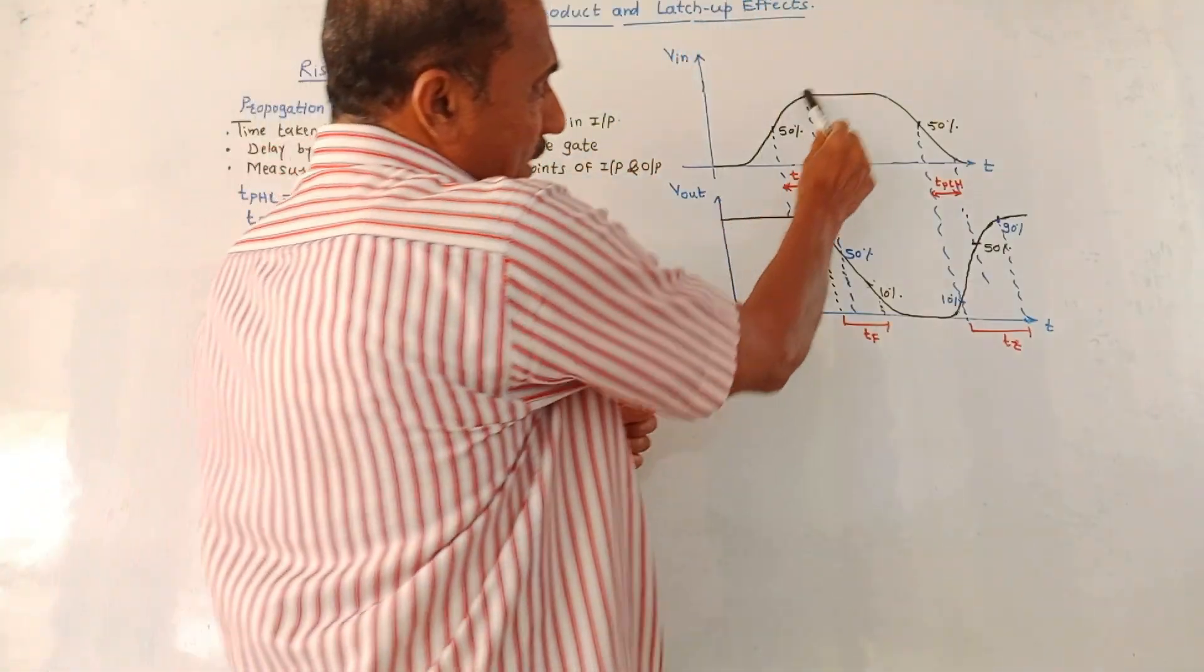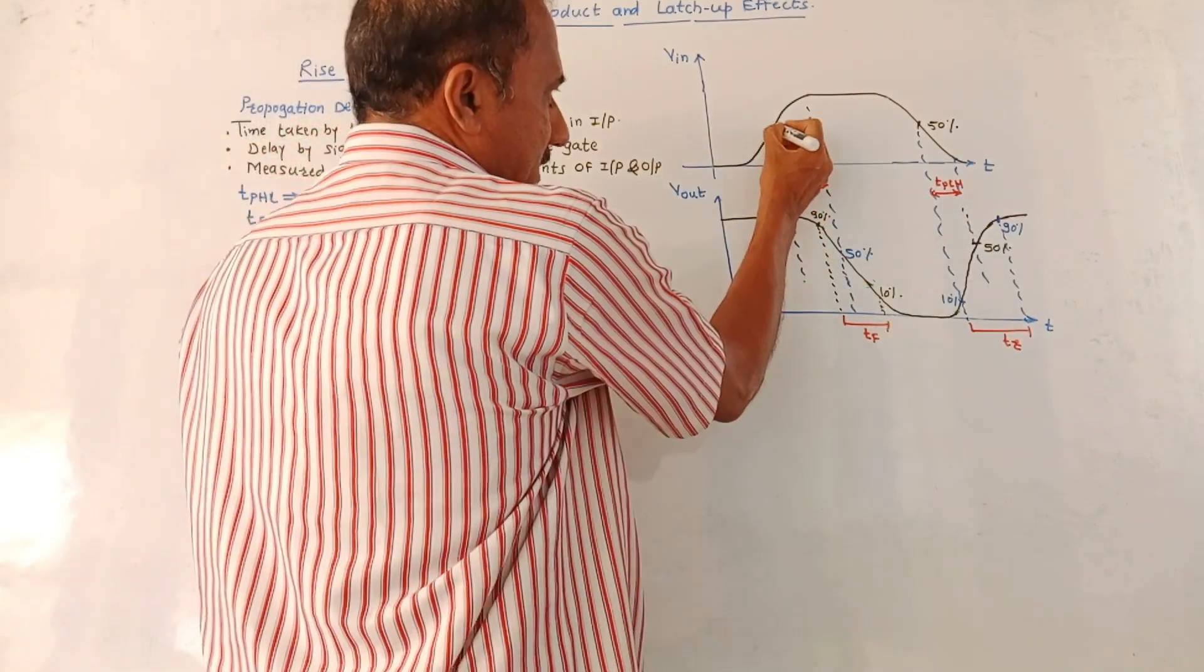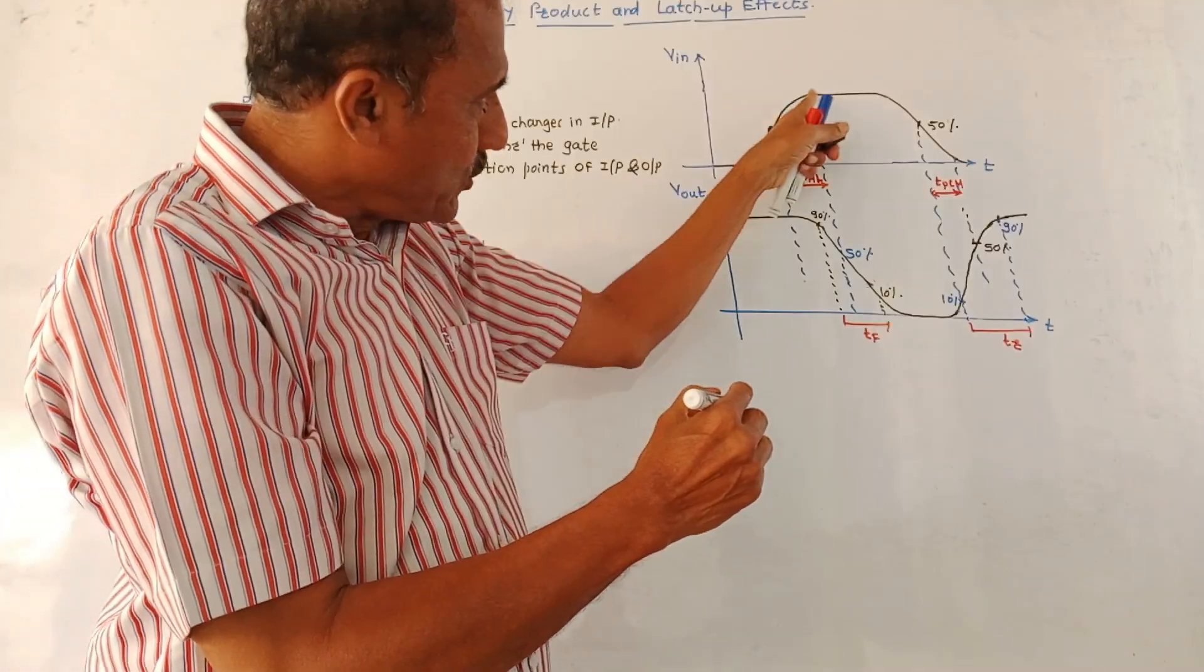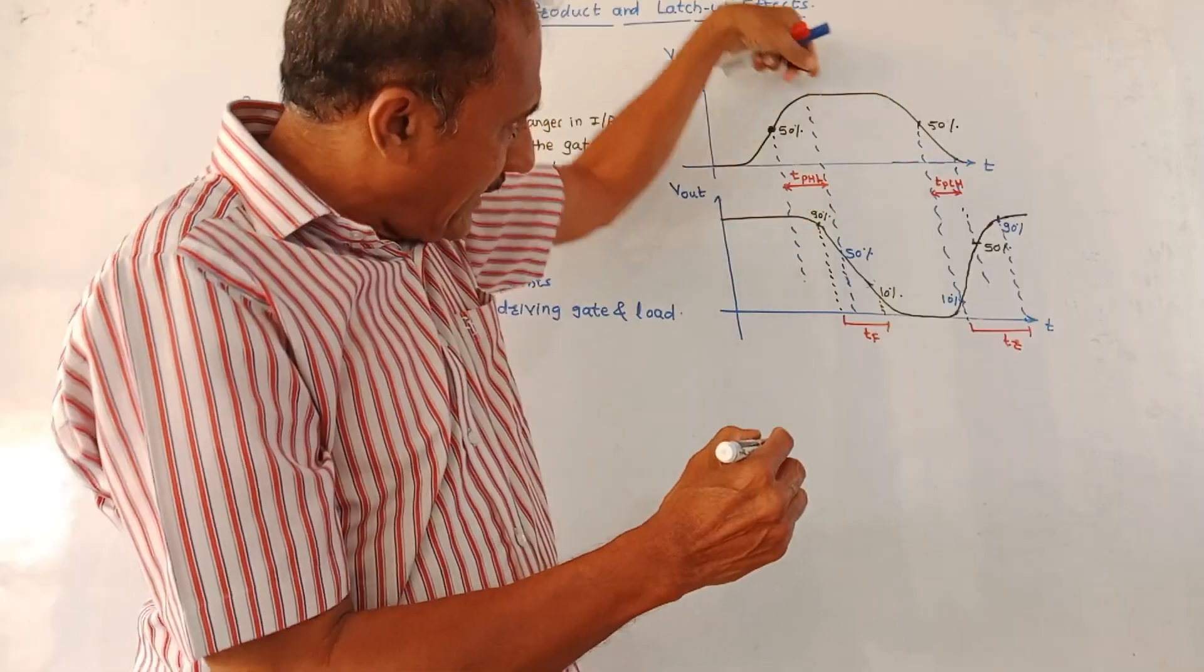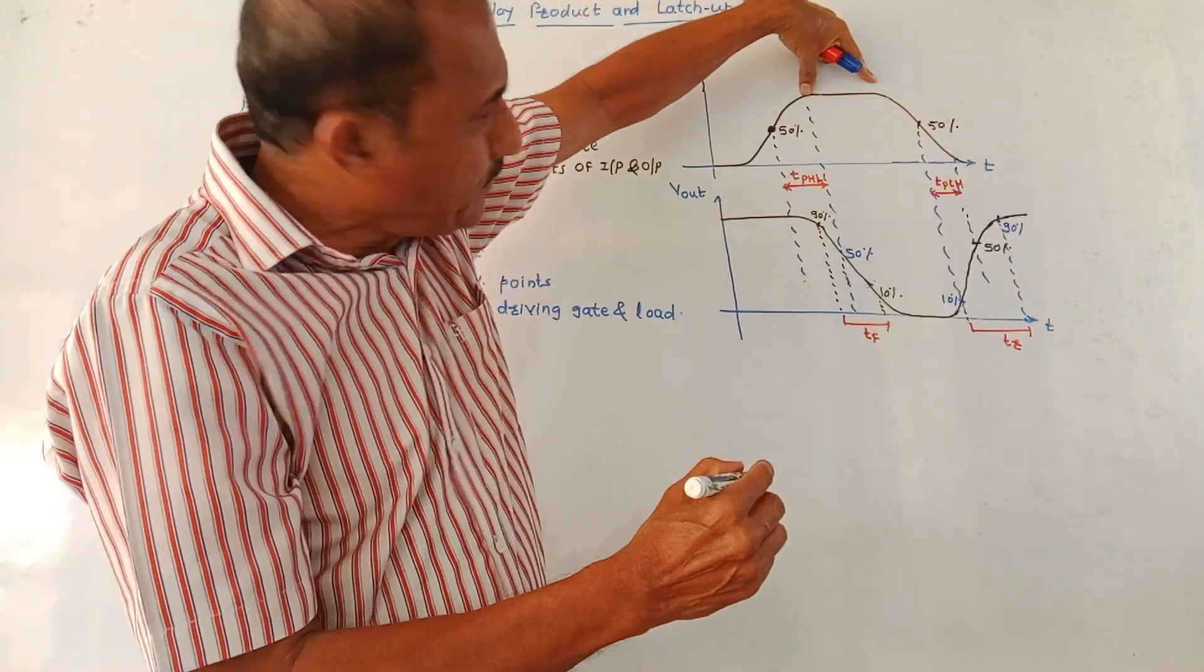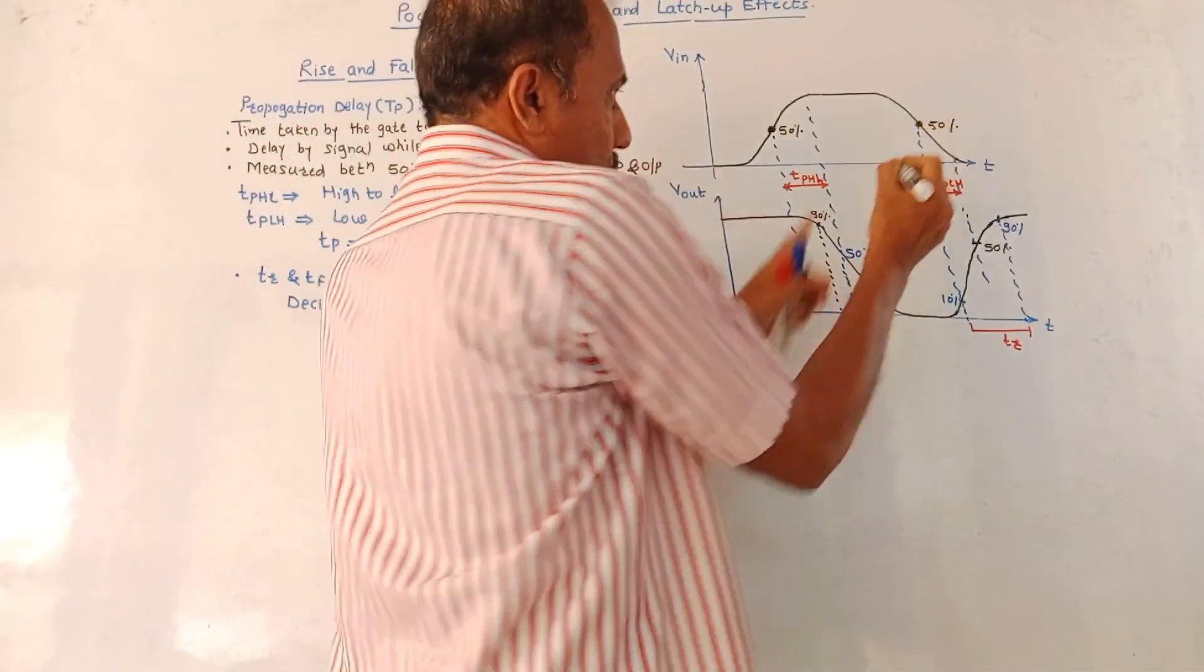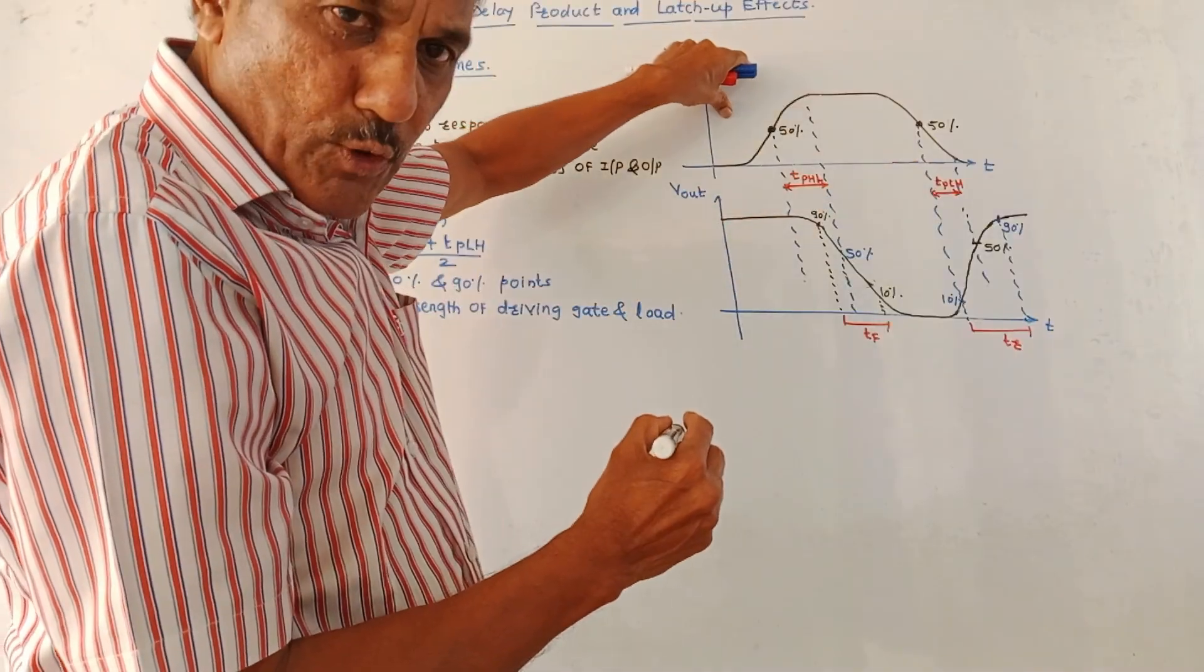As far as this input waveform is concerned, which is graph of V in input voltage versus time, this is 50% time when the signal is rising from 0 to some fixed value. It remains stable constant in this portion. Again, it drops down to 0. This is again 50% point. These two are 50% points related to the input waveform.